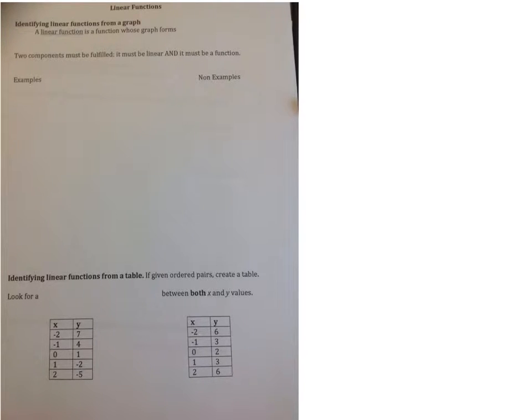This is our first lesson for Chapter 5, Linear Functions. Identifying linear functions from a graph. A linear function is a function whose graph forms—think of what linear means—a straight line.